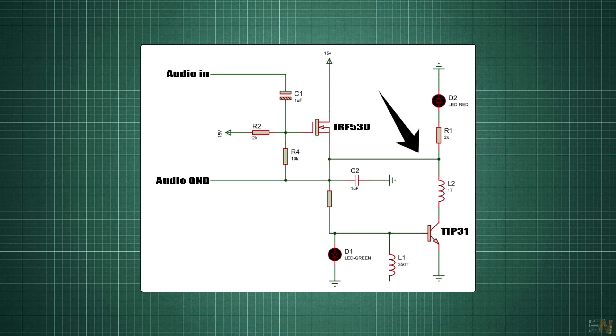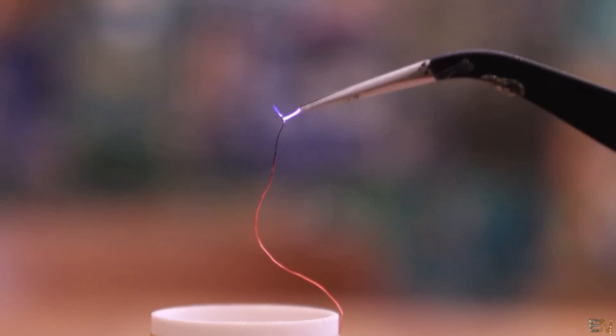By changing the amplitude according to the sound signal, the arcs will be stronger or weaker depending on the audio signal. So that's how we control this circuit with music.